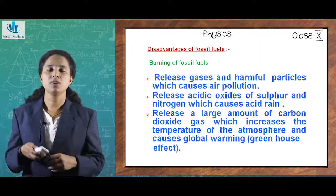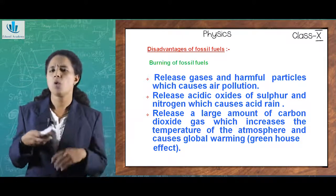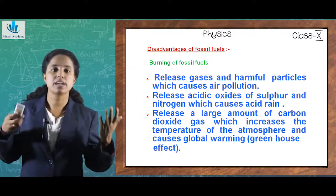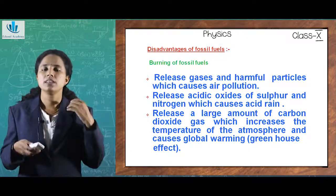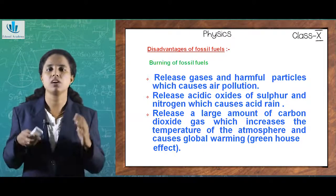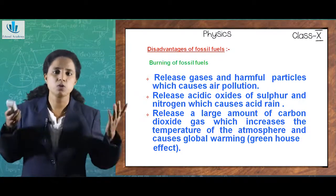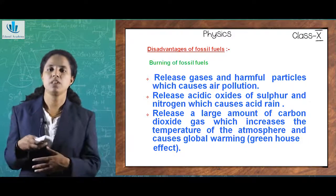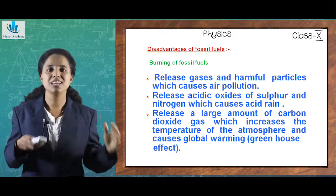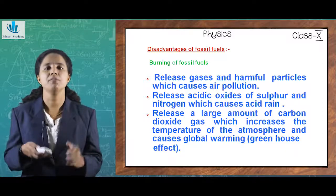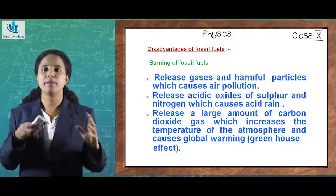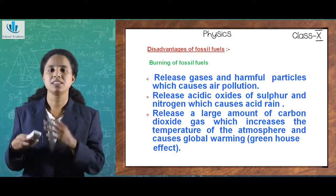Burning of fossil fuels also results in the greenhouse effect and global warming. The temperature of the atmosphere is rising at an alarming rate due to the emission of large amounts of carbon dioxide by burning fossil fuels like coal and petroleum. This increases atmospheric temperature and leads to greenhouse effect, which ultimately causes depletion of Earth's natural systems and many imbalances in nature. We need to understand these disadvantages and replace fossil fuels with renewable sources of energy.